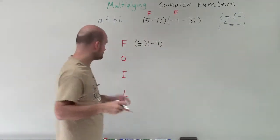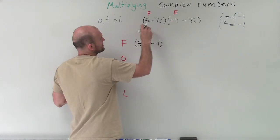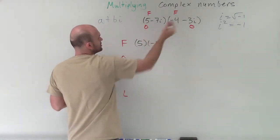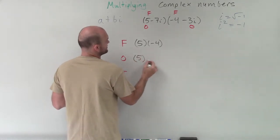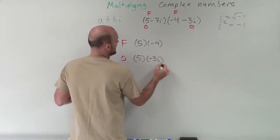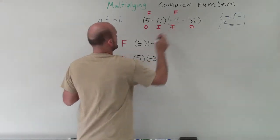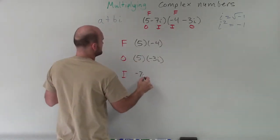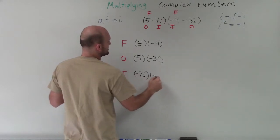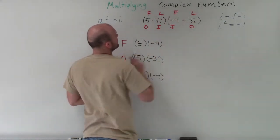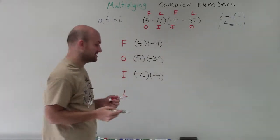Then we do the outer terms. All right, so we multiply the two outer terms of our binomials, which is going to be 5 times negative 3i. Then we do the two inner terms, which will be negative 7i times negative 4. Then we do the two last terms, which is negative 7i times negative 3i.